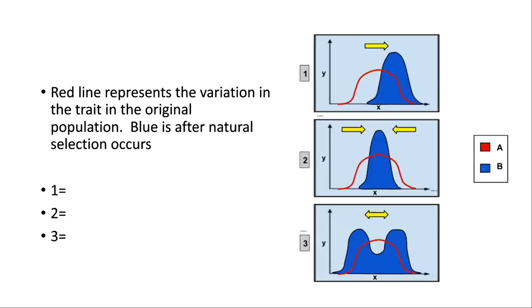We can visualize these types of selection with graphs. The Y-axis is the number of organisms and the X-axis is whatever that trait is. The red line shows what the population looked like to start — it's the same for all three. The blue represents what happened after selection. The first graph takes the population and skews it to the right; the second squeezes it tighter in the middle; the third forces it both ways.